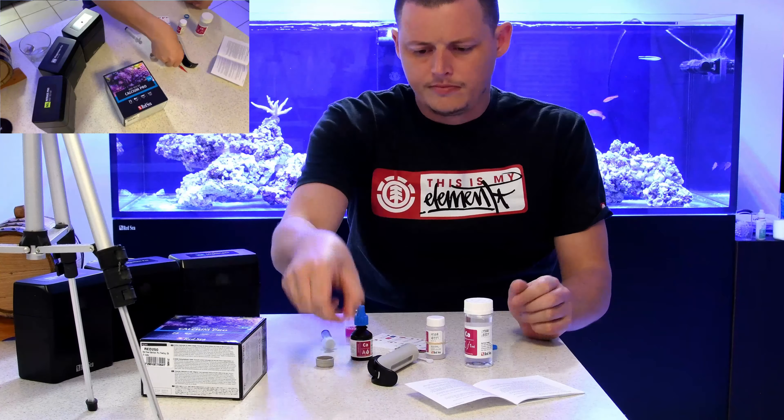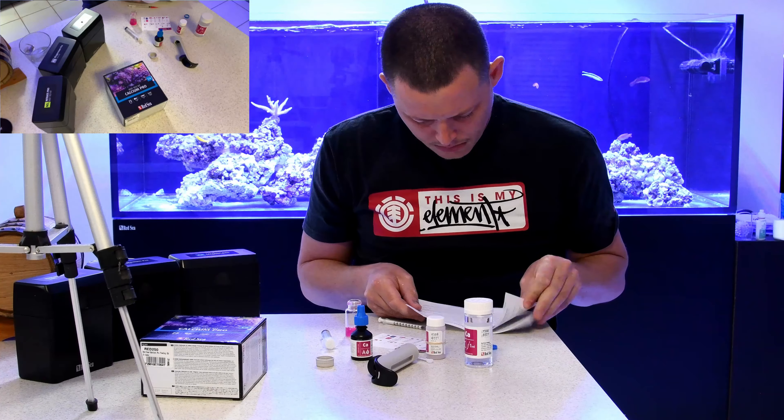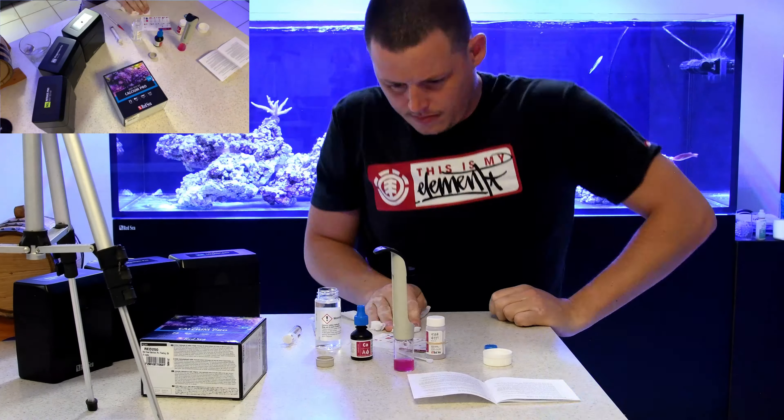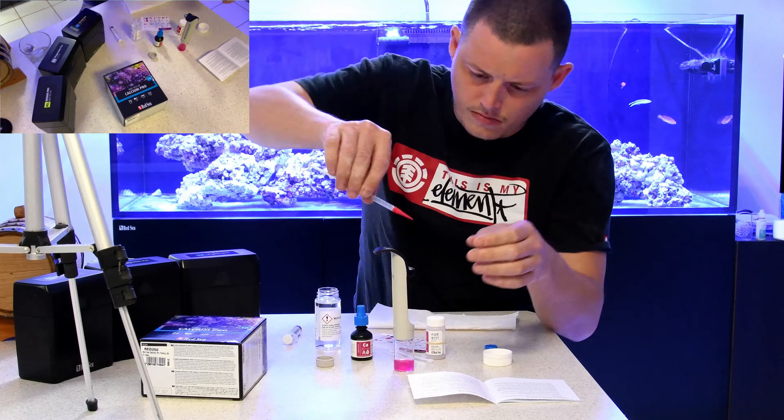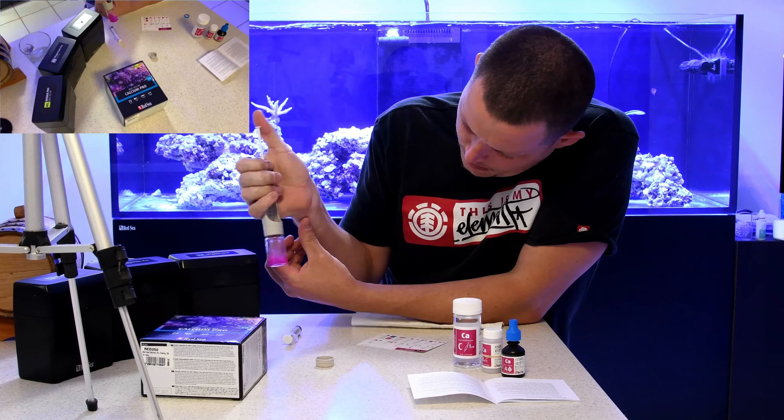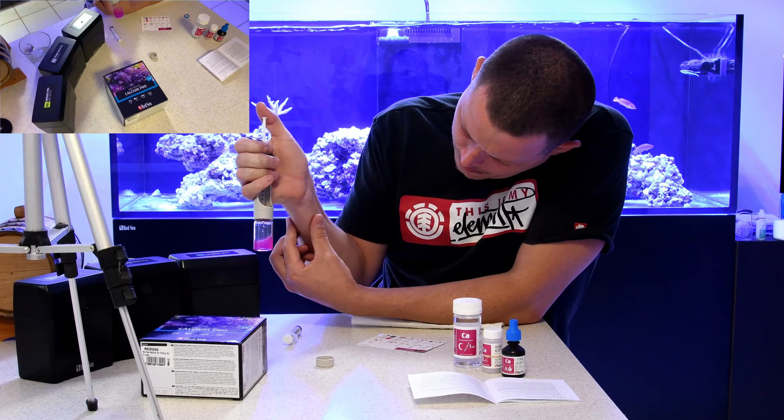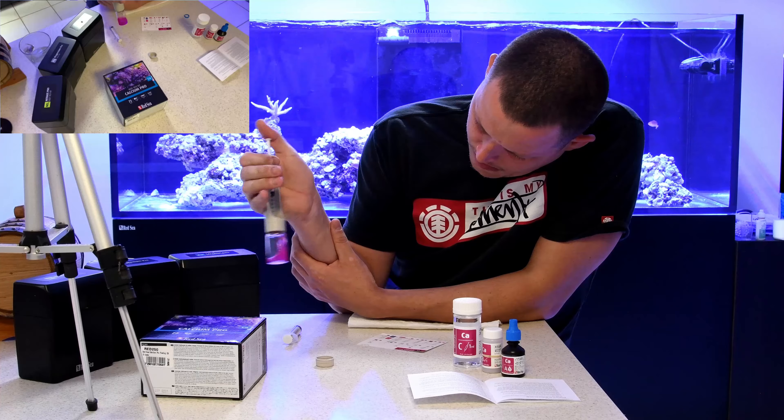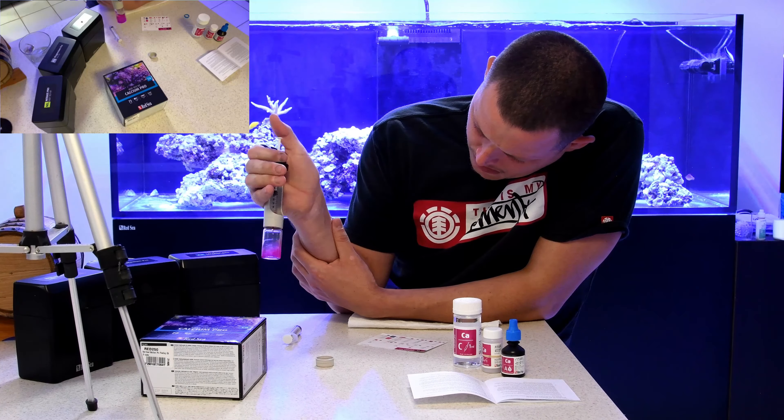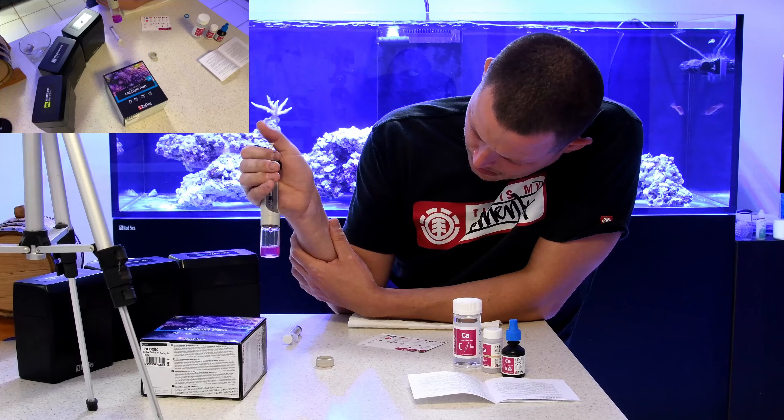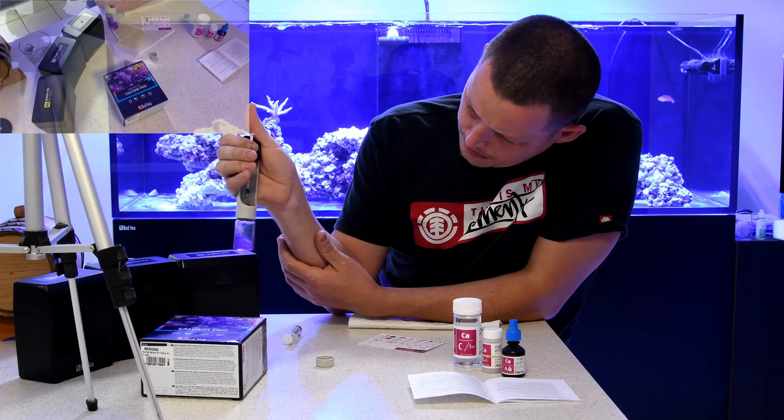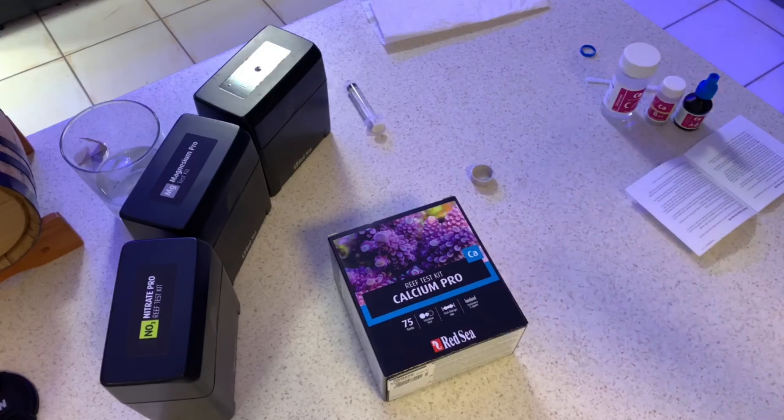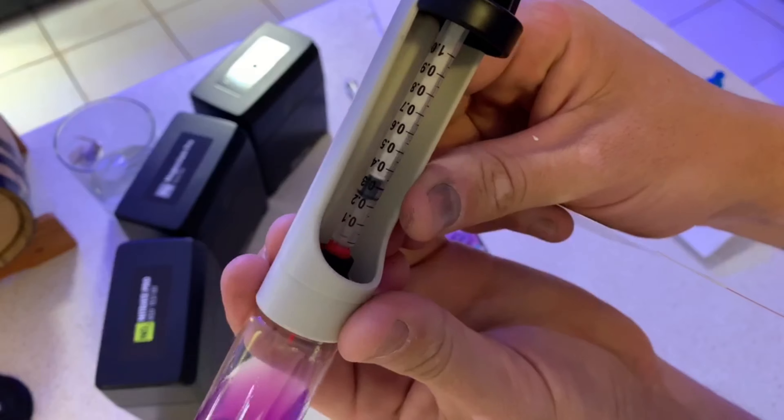I also have an API test kit and a HANA test kit for calcium. The HANA is super accurate but a little bit finicky to get repeatable measurements, and not something you want to commit to every time. API is not too accurate. So having the accuracy of this at the speed you can do a test is a no-brainer, it's great.